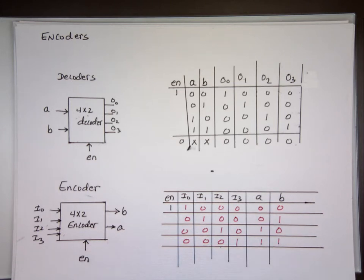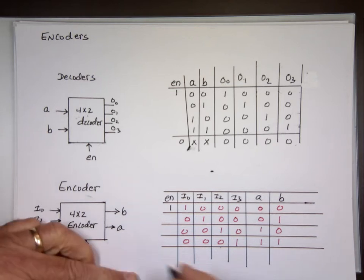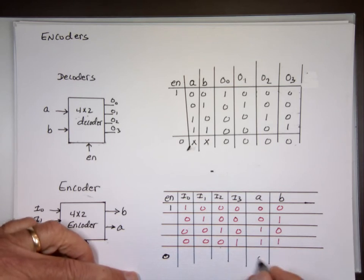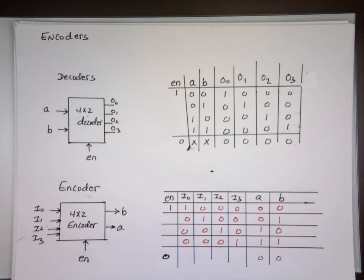So it's completely opposite to the decoder. And if the enable is 0, forget it — nothing is going to happen. This chip is off. Doesn't matter what the inputs are, you're not getting anything. You get 0,0 out of it. The chip is completely shut off — it's locked, not even active in the circuit.